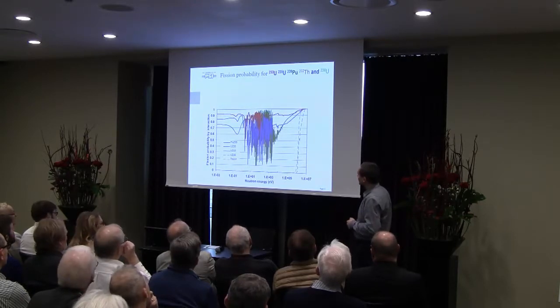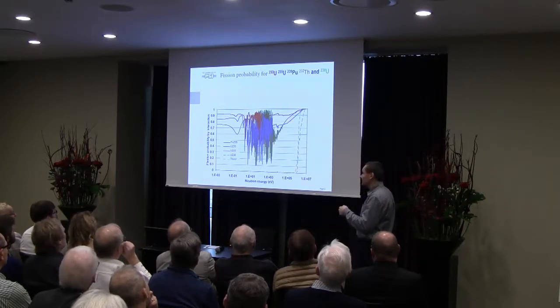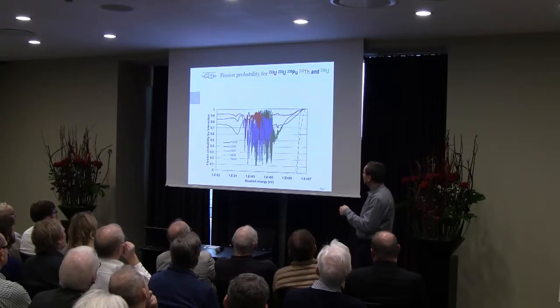The red curve is uranium-233. You can see that the fission probability for uranium-233 is excellent — it's the best in both the thermal area and in the fast area. If you look at plutonium, it's really bad in the thermal spectrum and not so good in the fast spectrum either. For uranium-235, the workhorse today, it's acceptable in the thermal spectrum but also not good for fast reactors.